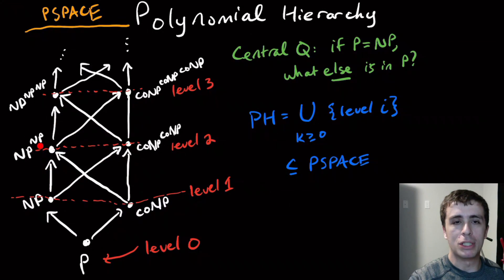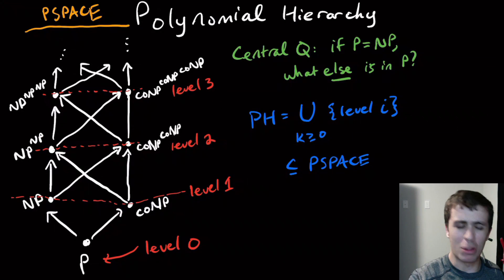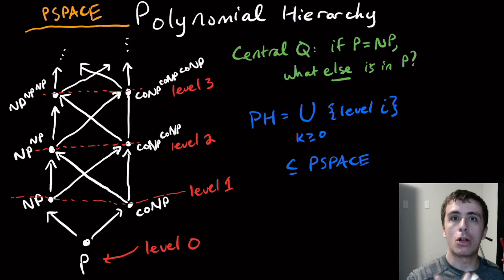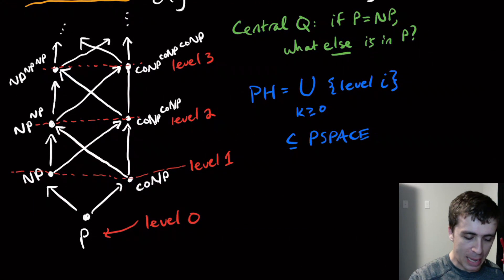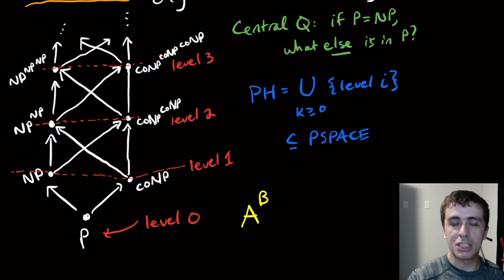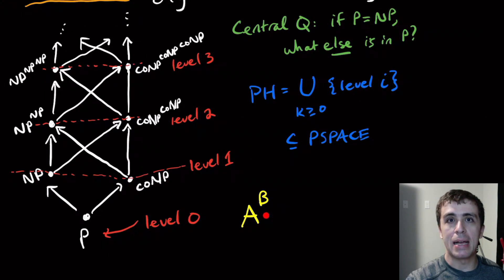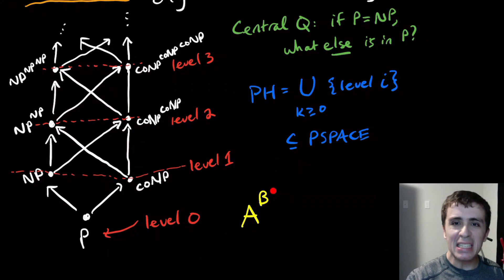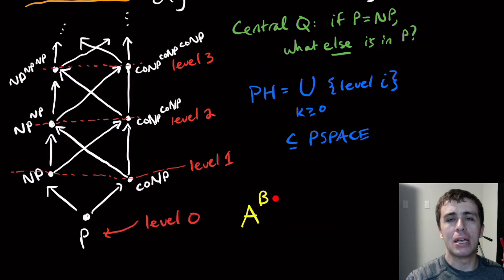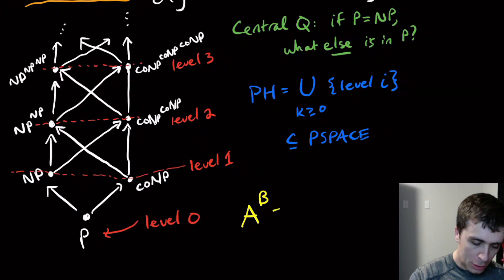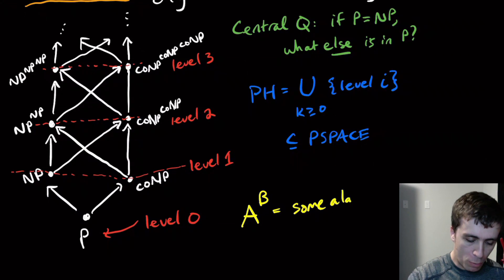What are these other levels? Where I have NP raised to the power NP, you may wonder what that means. That is what's called an Oracle Turing machine. If we have some problem A raised to the power B — and this generalizes to a class of languages — if A and B are languages, this means that any algorithm for A has instant access to some language in B.